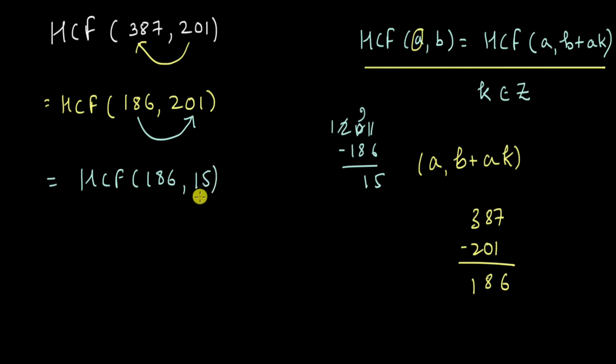Now see. Now we can subtract one multiple of 15. We can keep 15 as the same and subtract one multiple of 15 from 186. But since 186 is so much larger than 15 we can subtract 15 into maybe 10. That is 150. We can even subtract 15 into 11.